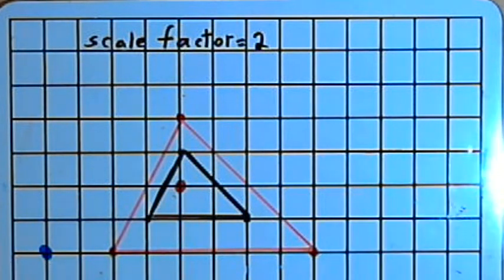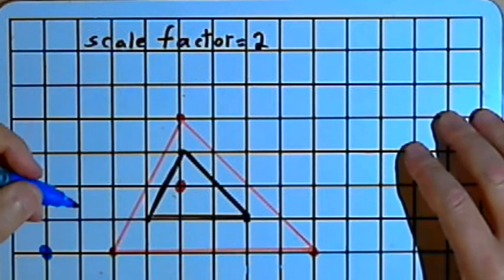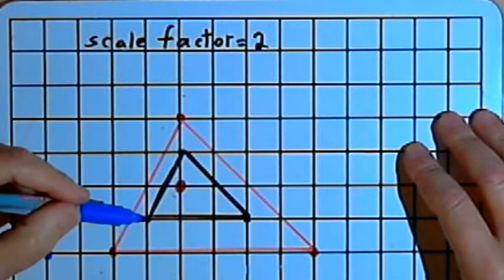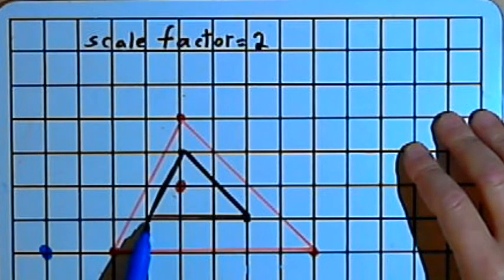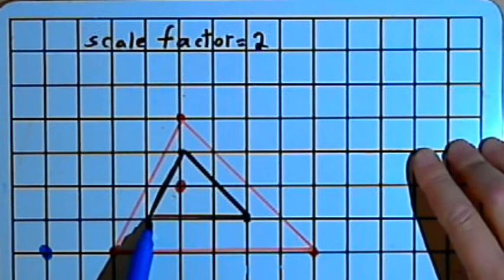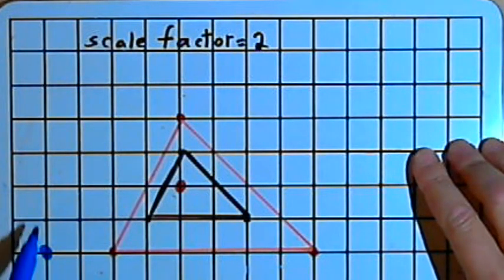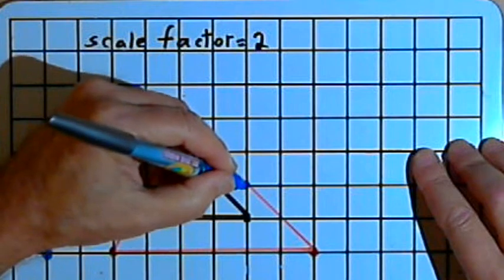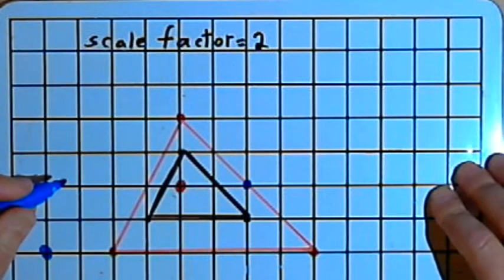Now let's do another dilation using that blue dot as the center of dilation and see what the difference is. I want to find the dilated image of this lower left angle. Starting from the center of dilation, I have to go up one unit and over three to get to it. So that means for its dilated image, I would want to go up two units and over six to the right. That takes me here, so I'll mark that point.